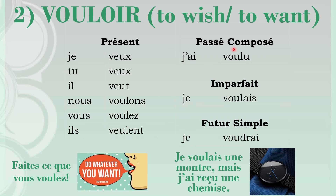In the passé composé, the past participle of vouloir is voulu — the -oir ending becomes -u. In the imparfait, you remove the -ons from the nous form and add the endings: je voulais, tu voulais, il voulait, and so on. In the futur simple, it takes an irregular root — vouloir becomes voudr: je voudrais, tu voudras, il voudra, and so on.